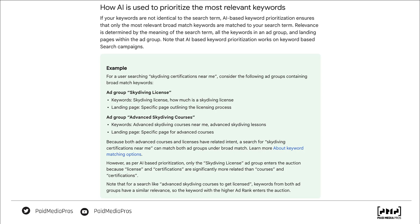They elaborate further in the green chart, again using 'skydiving certifications near me.' Even though 'advanced skydiving courses' might lean toward an advanced user, somebody trying to get a certificate finds that a course is not nearly as closely tied to a license as a certification. So depending on all of these different inputs, Google will use its AI to match which of your terms is most relevant to the search term.